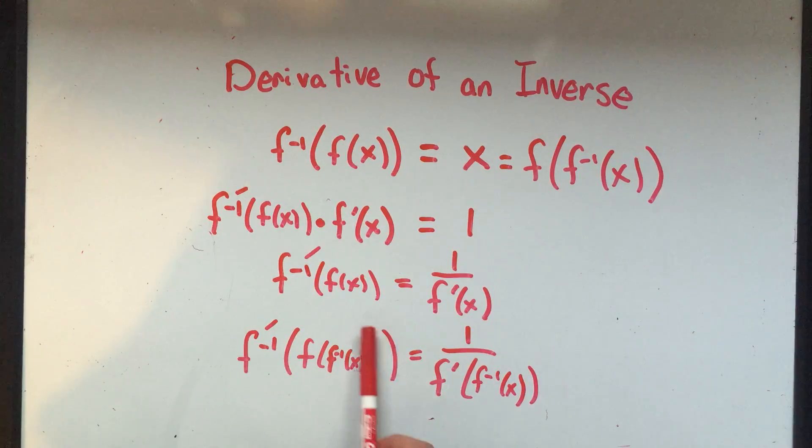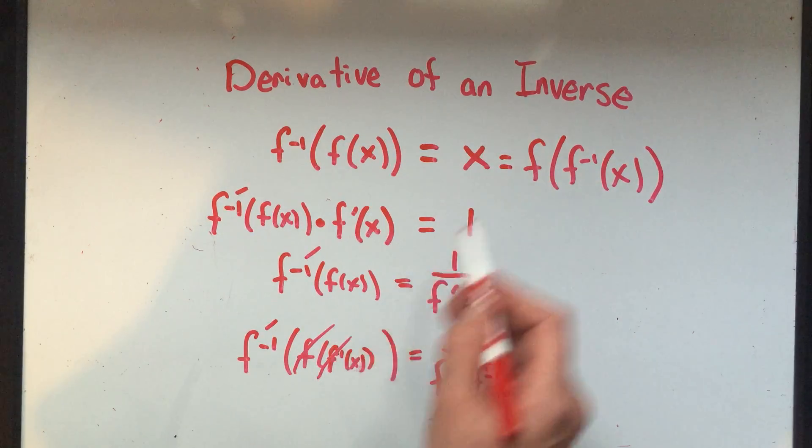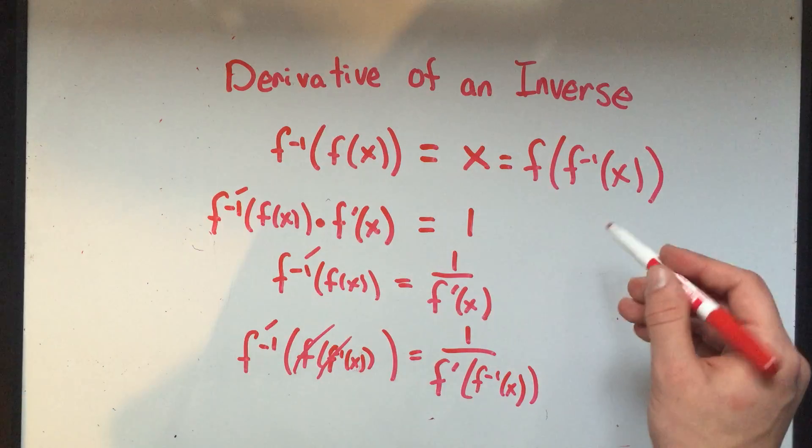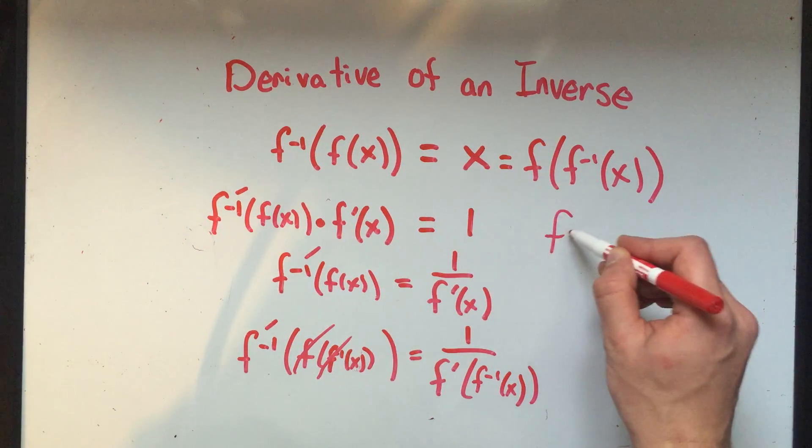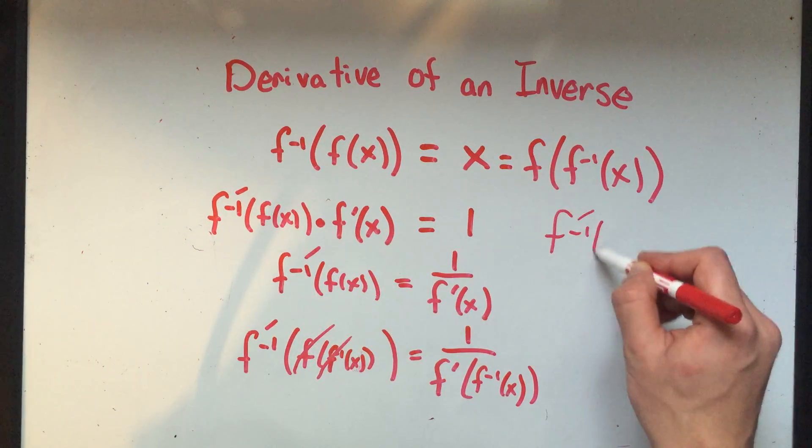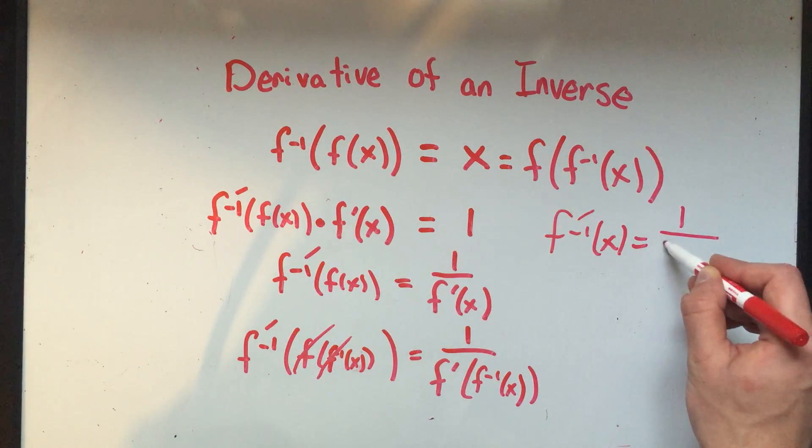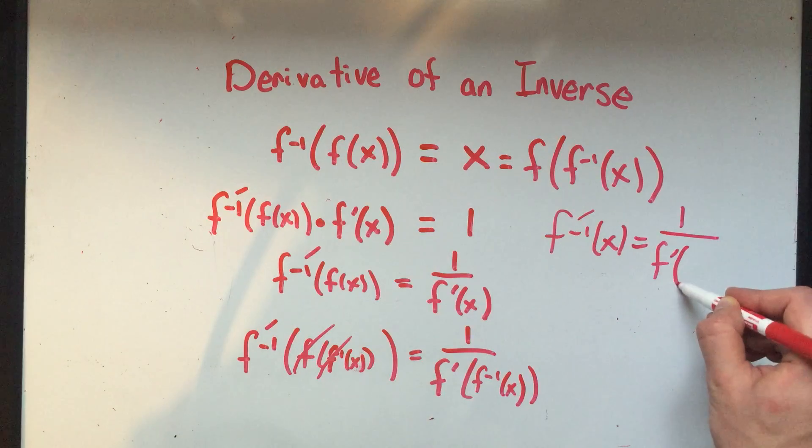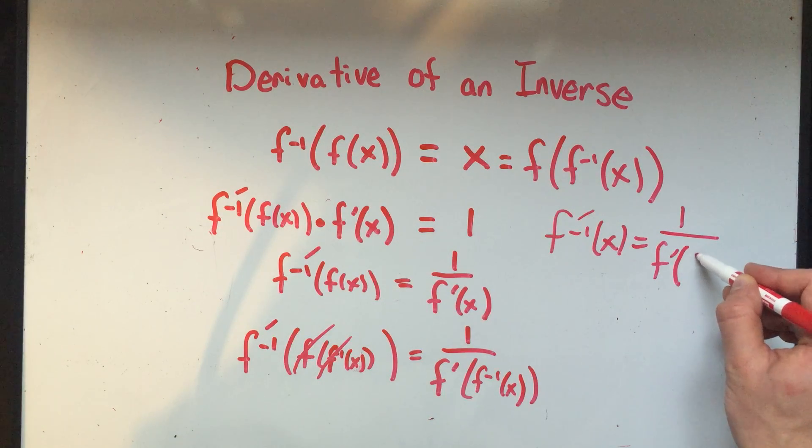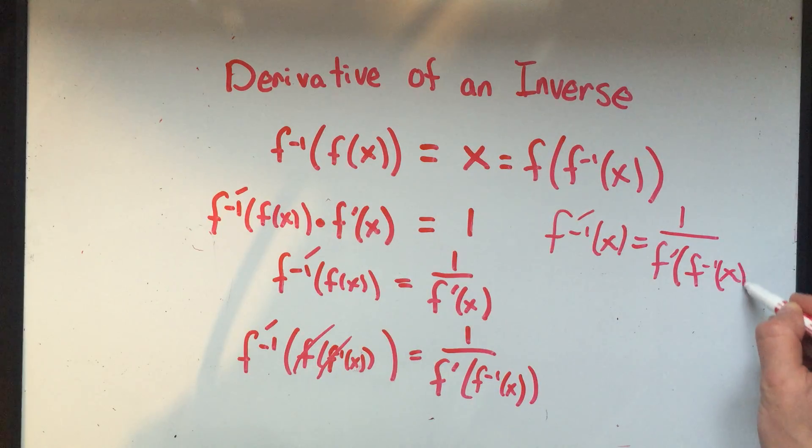I did that because of this fact again. Right here on the inside, I've got f of f inverse of x. So the f and the f inverse kind of undo each other. And what I'm left with is that f inverse prime of x equals 1 over f prime, and my f prime is evaluated at f inverse of x.